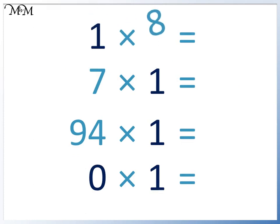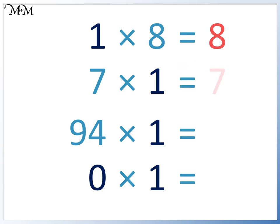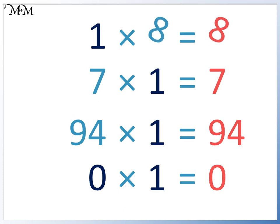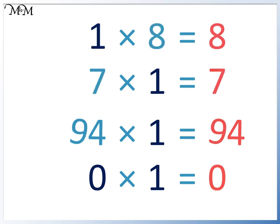We will now look at the following examples. 1 times 8 equals 8 — we just get the number 8. 7 times 1 will not make 7 any larger; we just get 7. Even large numbers like 94 remain the same when multiplied by 1. 94 times 1 equals 94. 0 will also remain the same when it's multiplied by 1. 0 times 1 equals 0. When multiplying by 1, the answer is just the other number: 8, 7, 94 and 0.